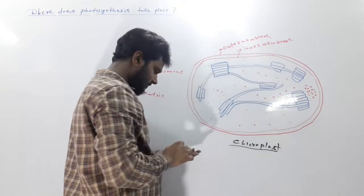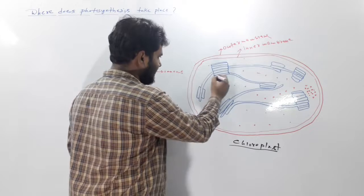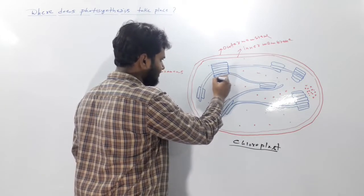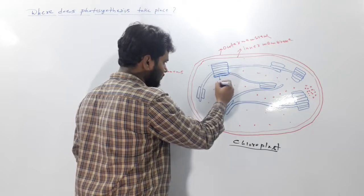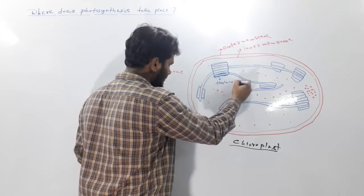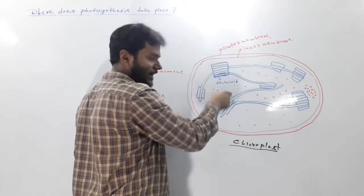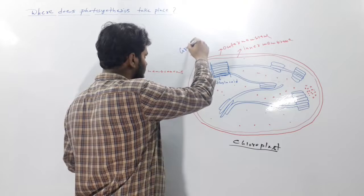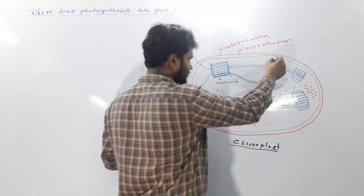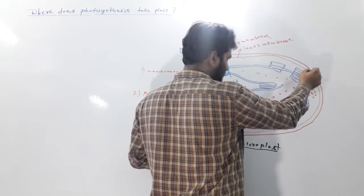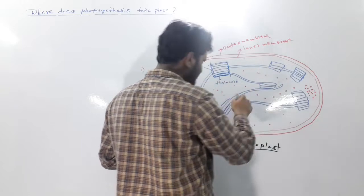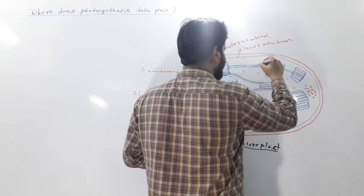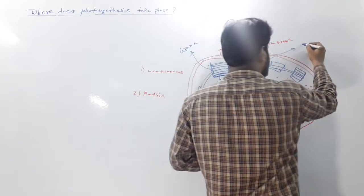These are membranous structures. You can find these disc-shaped structures are called thylakoids. Single disc-shaped structures - this is one thylakoid. And a column of this thylakoid is called grana. This is one grana, this is another grana. And these granas are attached by the structure called stroma lamelli.